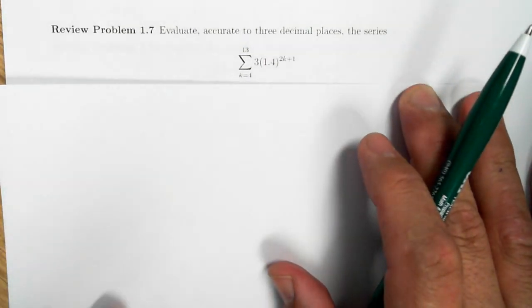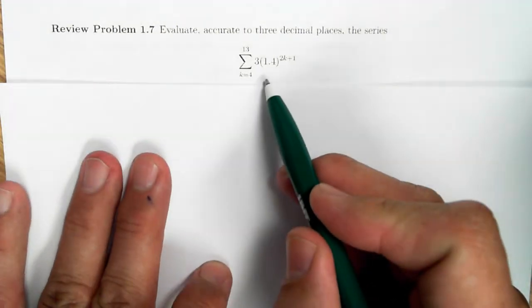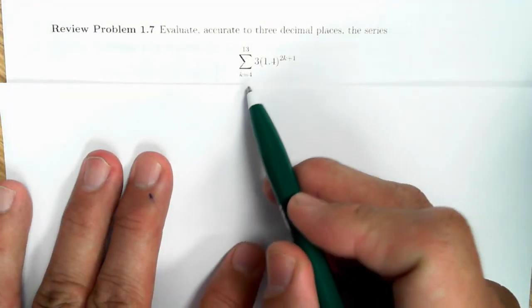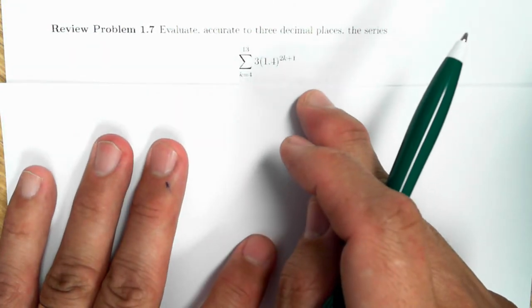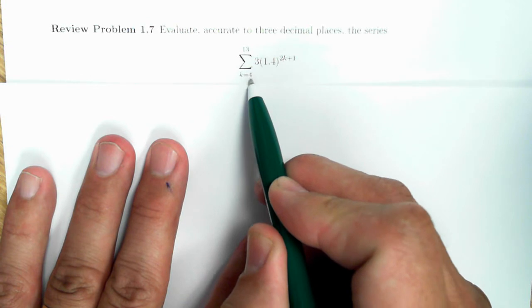This is an example of a geometric series. There are several ways that this can be done. The way that I will do it here is by using a change of index. I'm going to change the index so that I can use the formula that we developed in class, where the bottom number is a 0 as opposed to a 4.